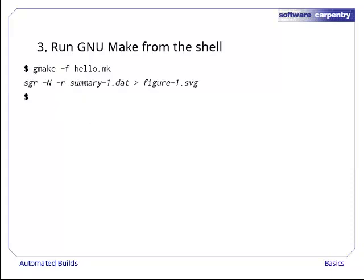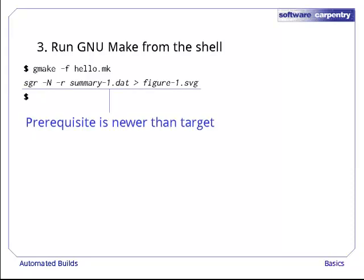And here's make's output. It has run the command we wanted it to. This happened because at least one prerequisite for figure1.svg was newer than figure1.svg itself. By default, make uses the time a file was last modified as its age. Opening a file in an editor to view it doesn't change this timestamp, but any change to its contents will. Since summary1.dat's timestamp was younger than figure1.svg's, make ran the shell command we gave it and created a new version of figure1.svg.